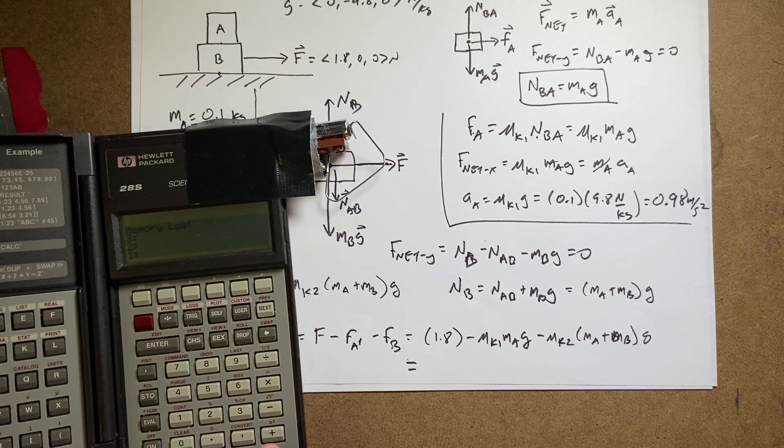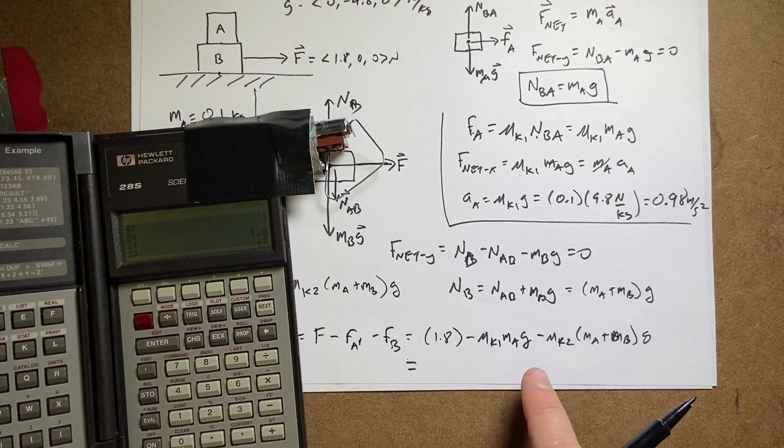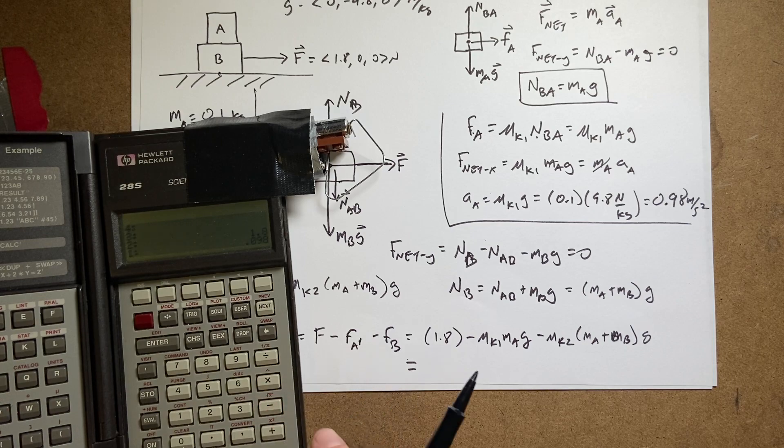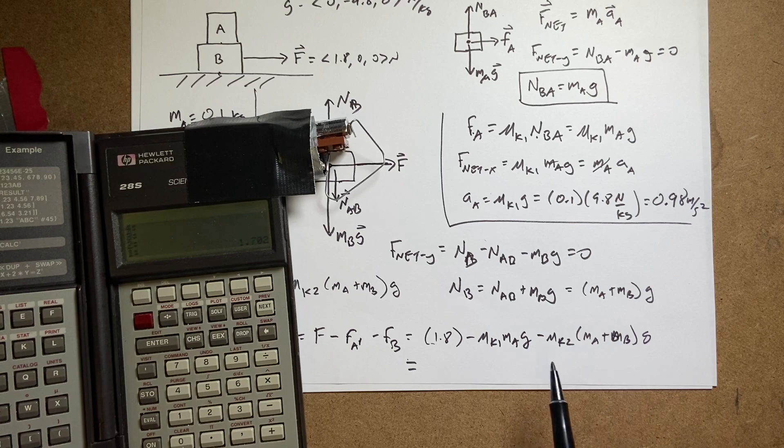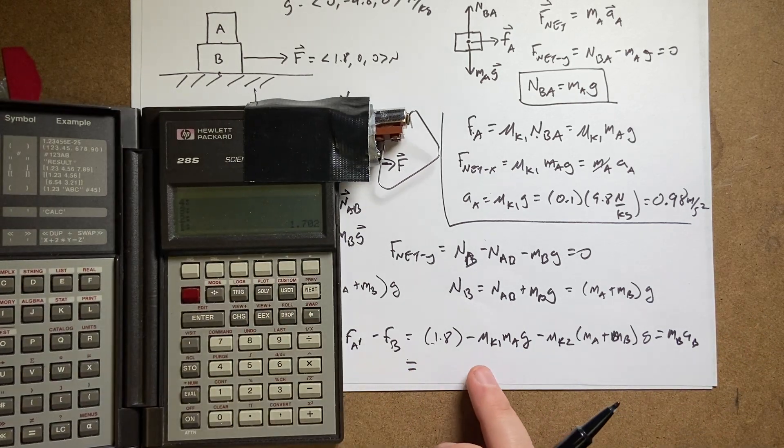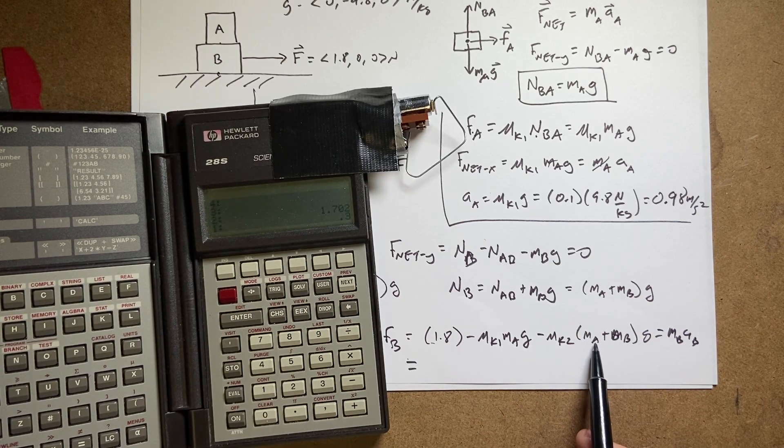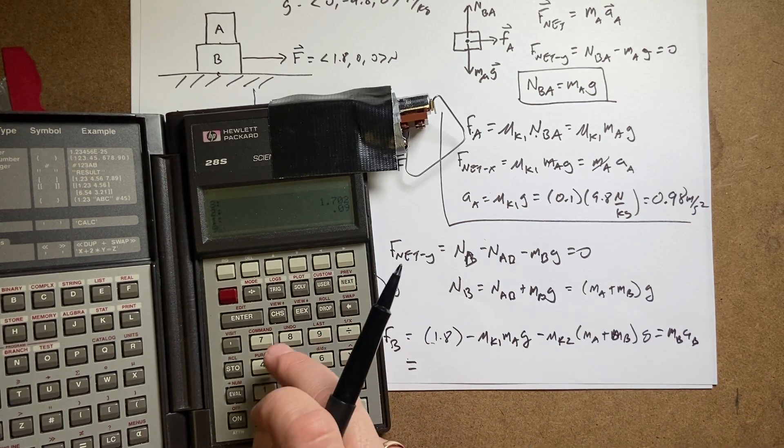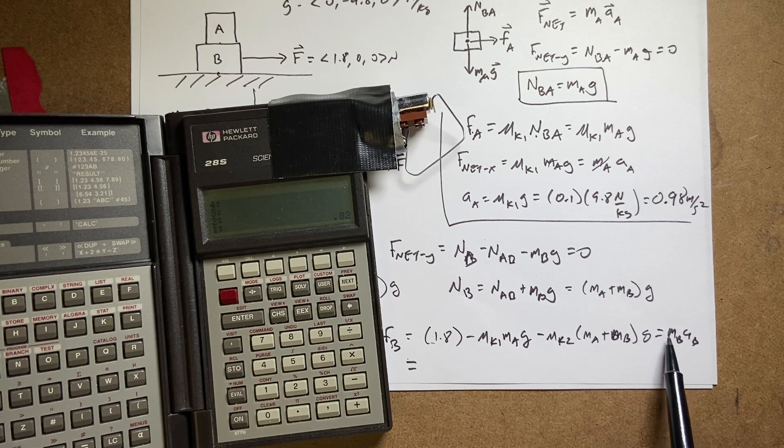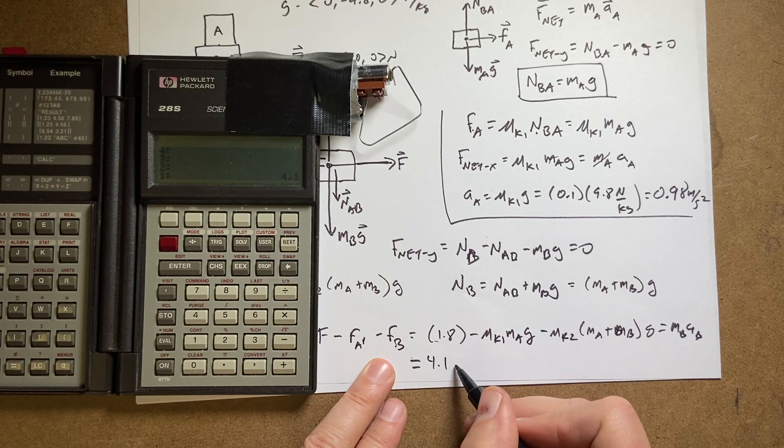So now I just need to put in my values. Turn on my calculator. So I'm going to start right here, 1.8, enter. Now I'm going to enter this term, so that's mu K 1 is .1, enter. M A is .1, .1 times. G is 9.8 times. And then I need to subtract that, so subtract. Now I'm going to get this part. That's equal to M B A B. So I'm going to divide all that by M B after I get done. Now I need to do this one. Mu K 2 is .3, enter. And then I need the sum of the masses. So it's .1 plus .2, so .3 times 9.8 times. And then I'm going to subtract all this. I have .82. Now I need to divide by M B, which was .2. And I get an acceleration of 4.1 meters per second squared.